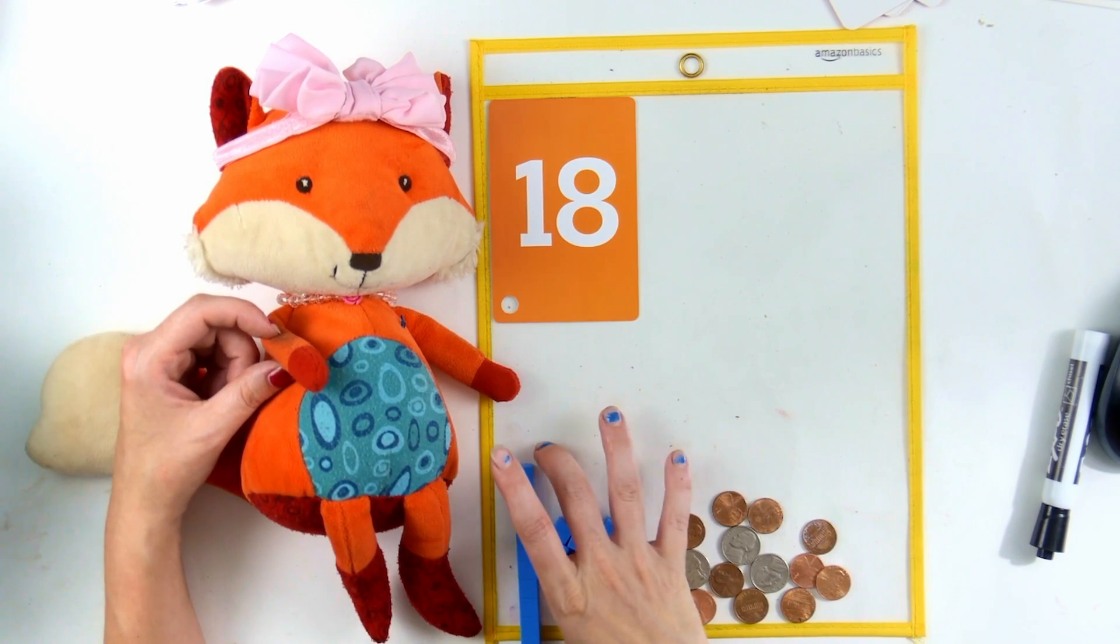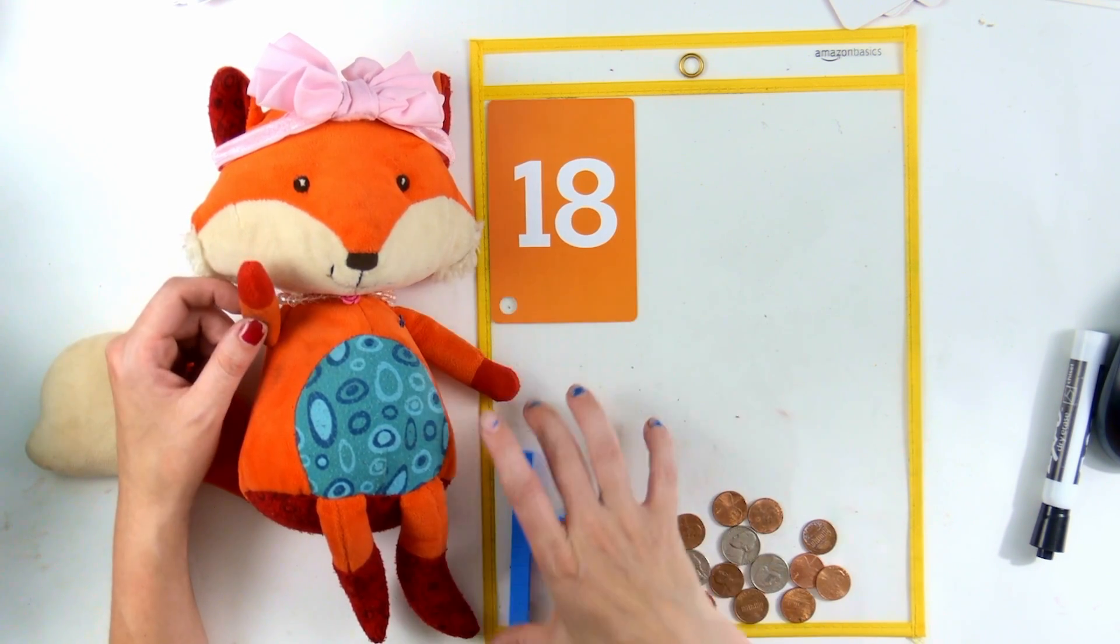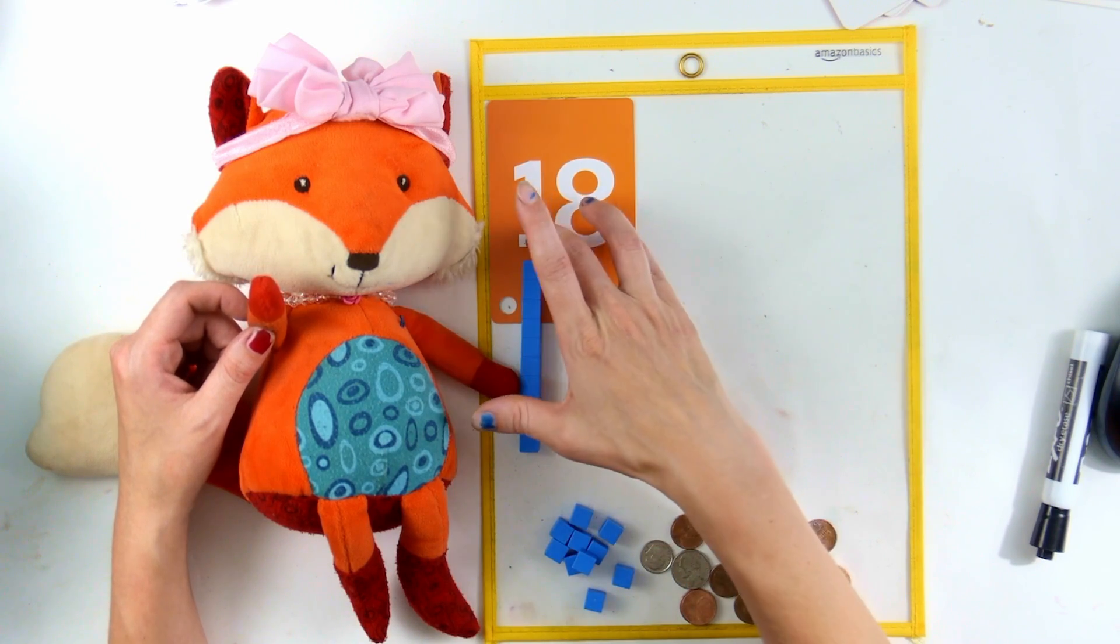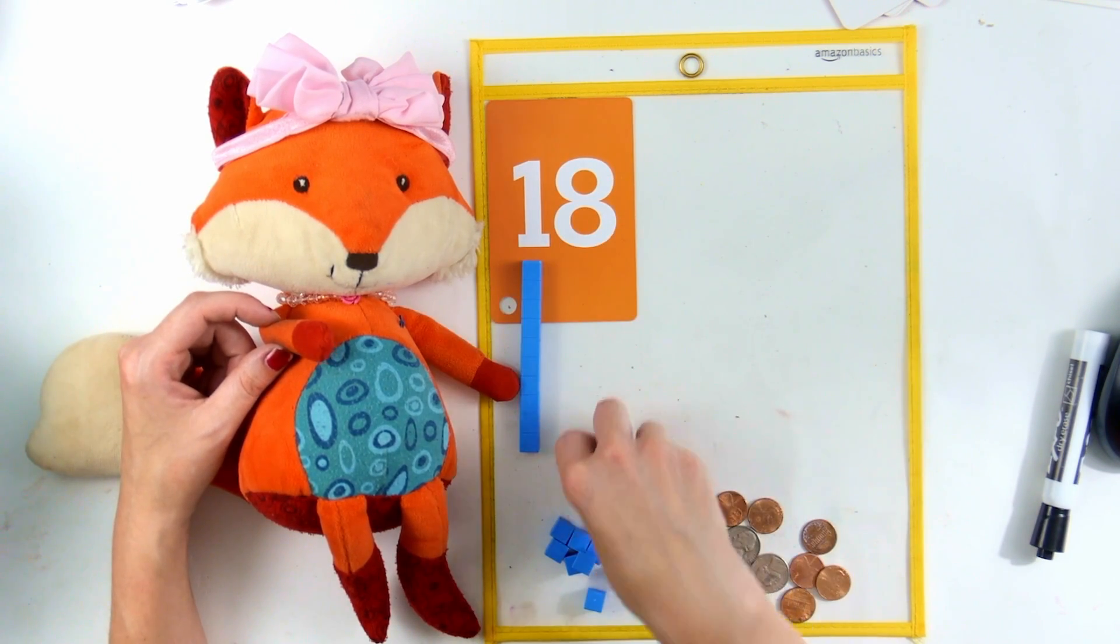Well, should we use our tens and ones? How many tens is it? One ten! That's right. There's one ten. And how many ones? Eight ones!